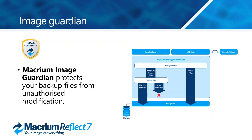Image Guardian is there to protect your backup files from unauthorized modification — not to be confused with actual malware protection, which protects everything on your laptop or PC. Macrium Image Guardian basically focuses on your backup. It's an added layer of protection to stop anything corrupting what you have saved. If anything tries to alter those backup files without going through Macrium, Image Guardian is there to stop it.